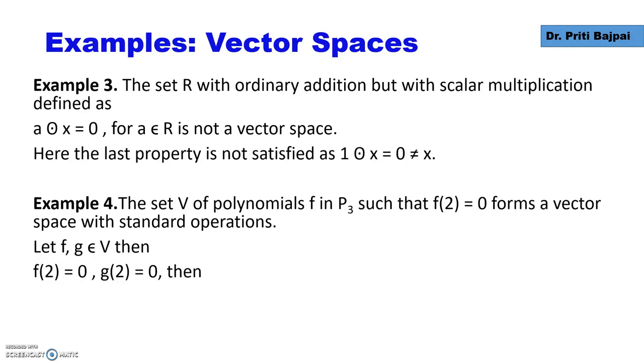Let's take one more example. What if V is a set of polynomials f in P₃ such that when you substitute 2, your function reduces to 0. This forms a vector space under all the standard operations, by which we mean how we add our polynomials and how we multiply a polynomial by a scalar.